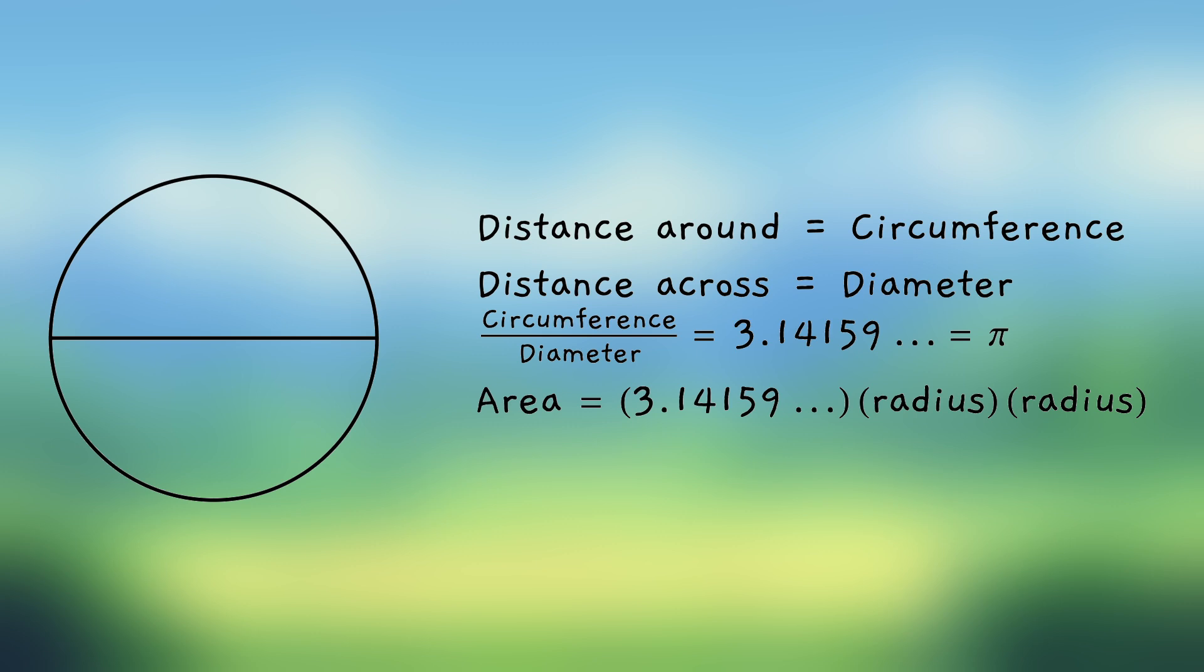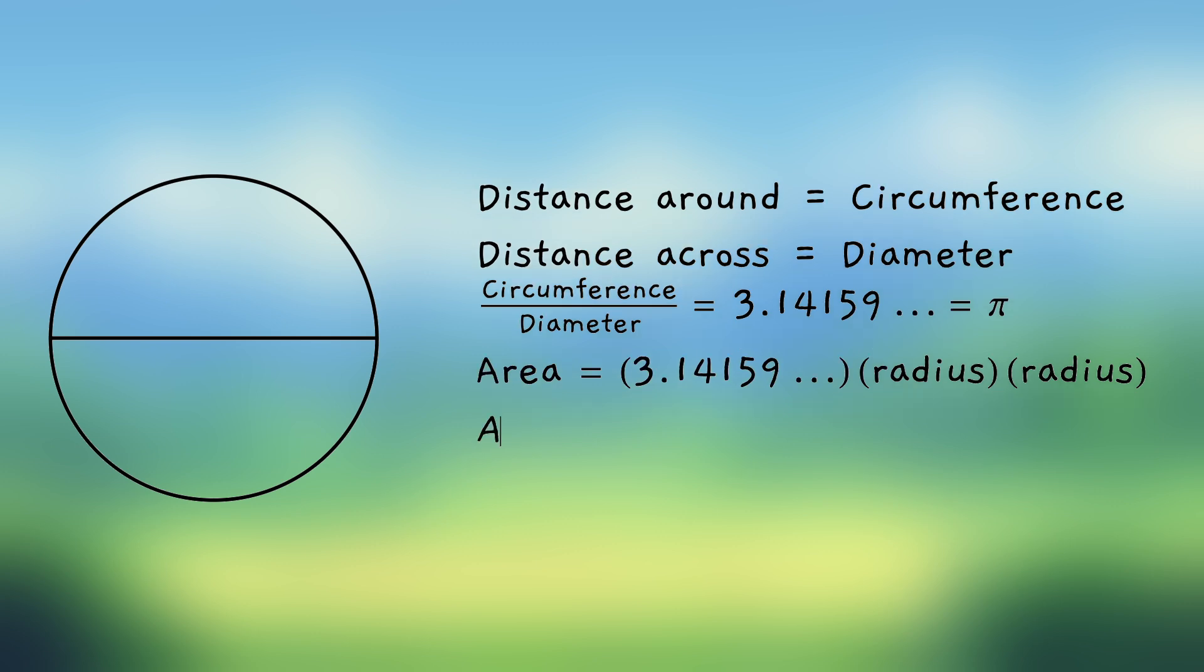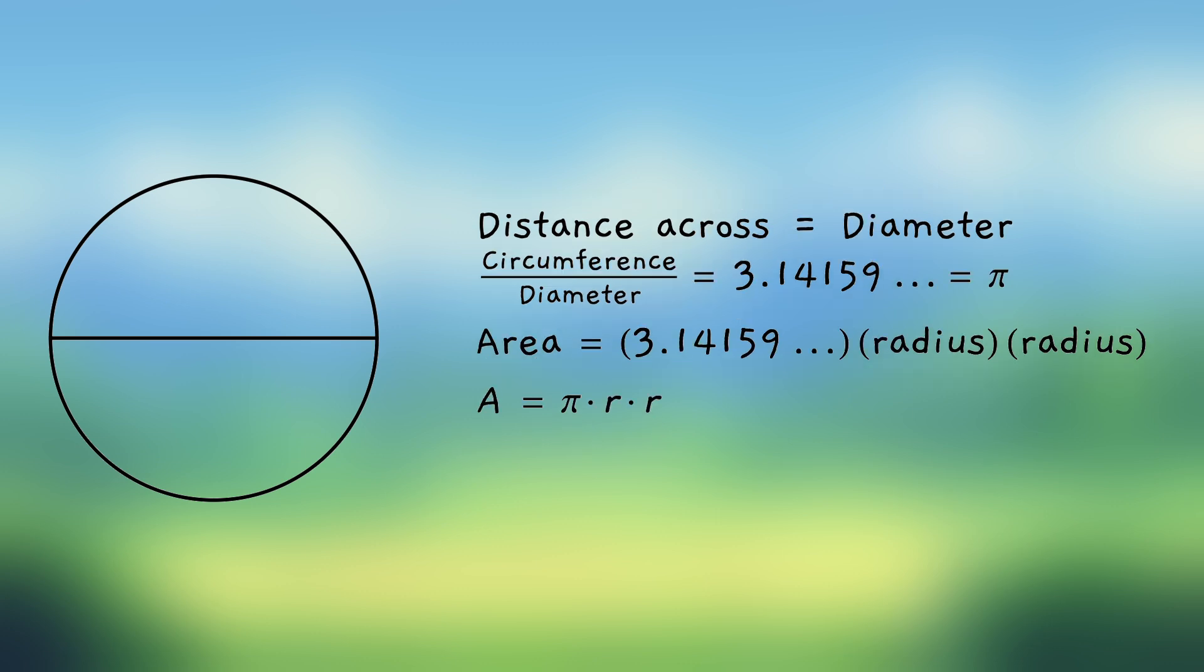Instead of the word area, let's just use the letter a. And instead of the number 3.14159, let's use the Greek letter pi. And instead of the word radius, let's use the letter r. And don't forget, exponents are a way to write down repeated multiplication.